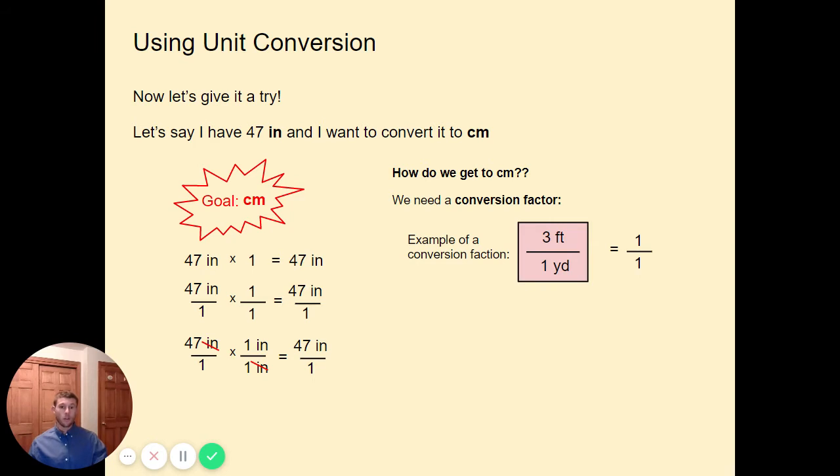This example is 3 feet over 1 yard. This basically just means that 3 feet is exactly equal to 1 yard. If you think about it as a yardstick, you know that if you put 3 rulers end to end, that's 3 feet and it's the exact same length as 1 yard. Another key note is that this 3 feet over 1 yard, you can simplify to 1 over 1. This just means that 3 feet is the exact same thing as 1 yard. Now in our case, we're not using feet and yards, we're using inches and centimeters.